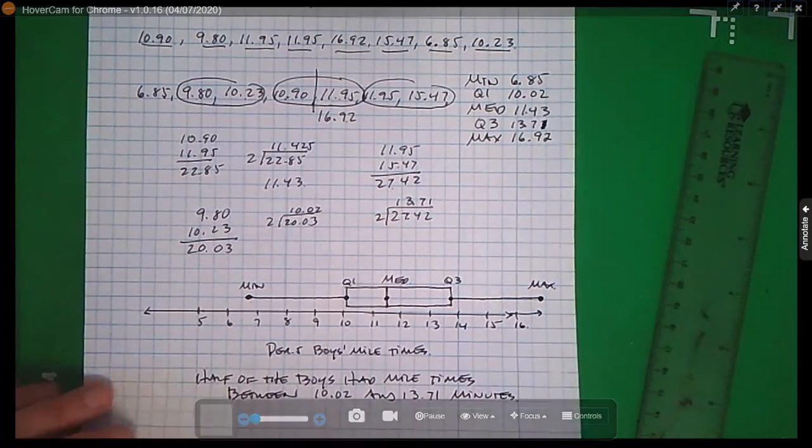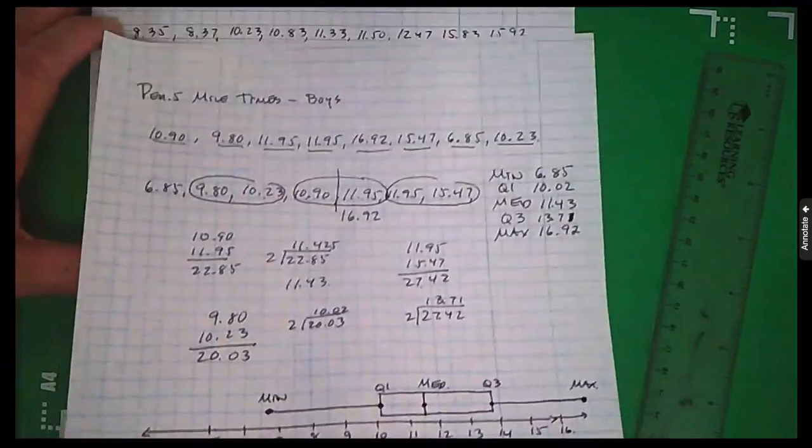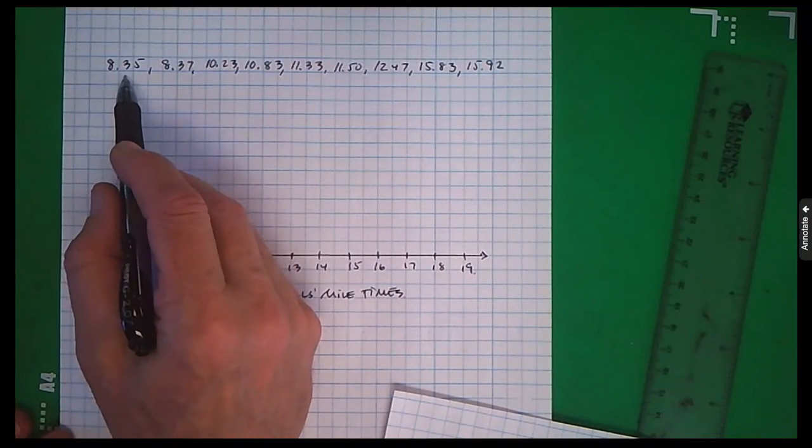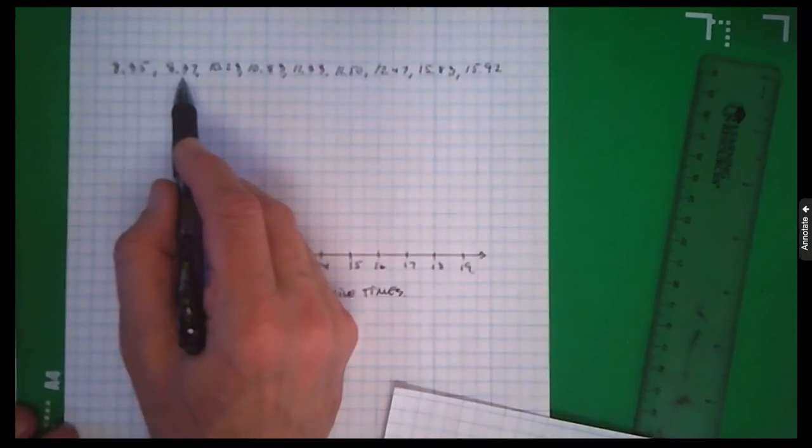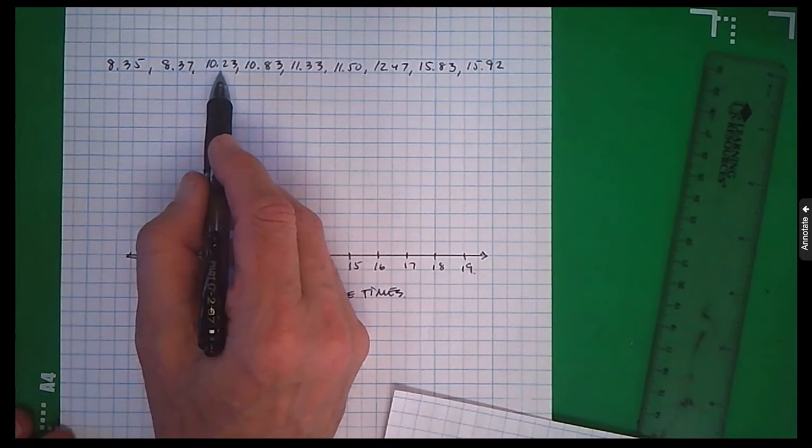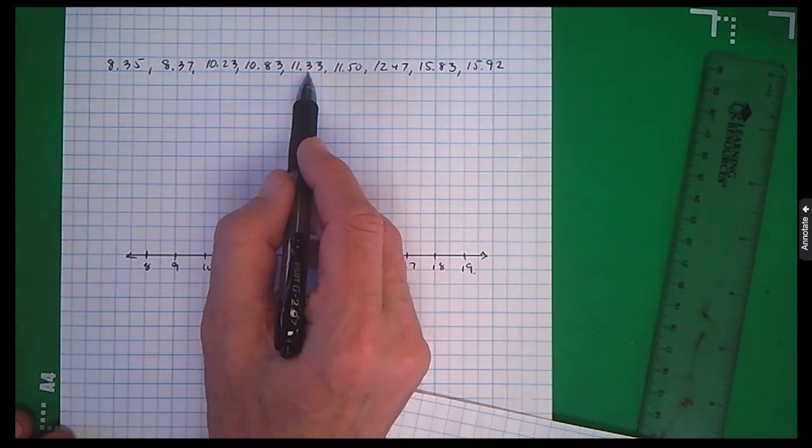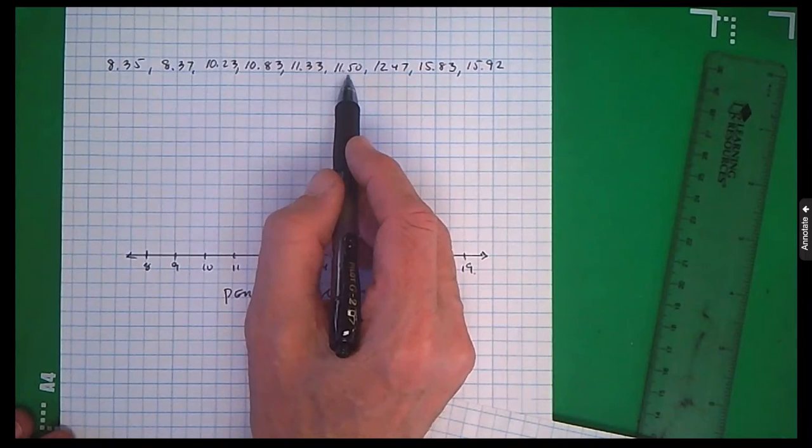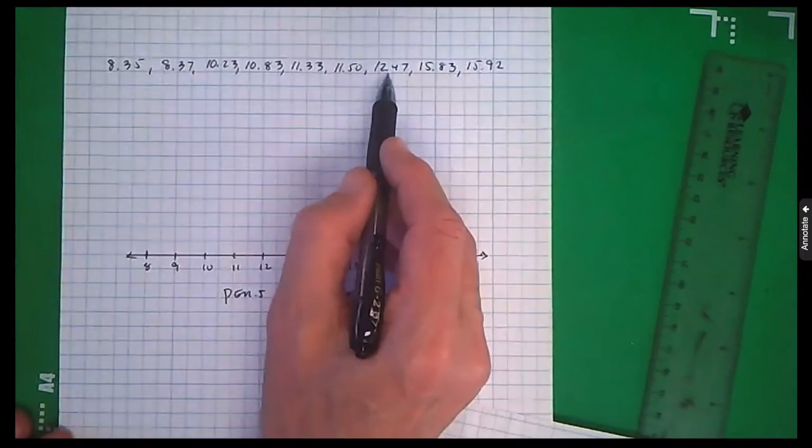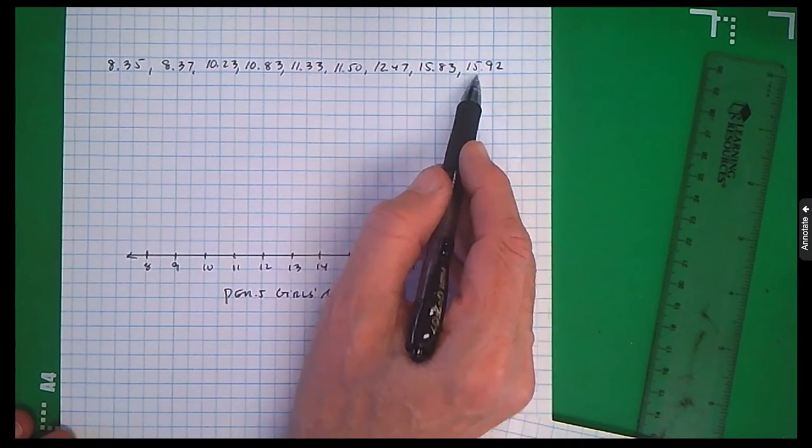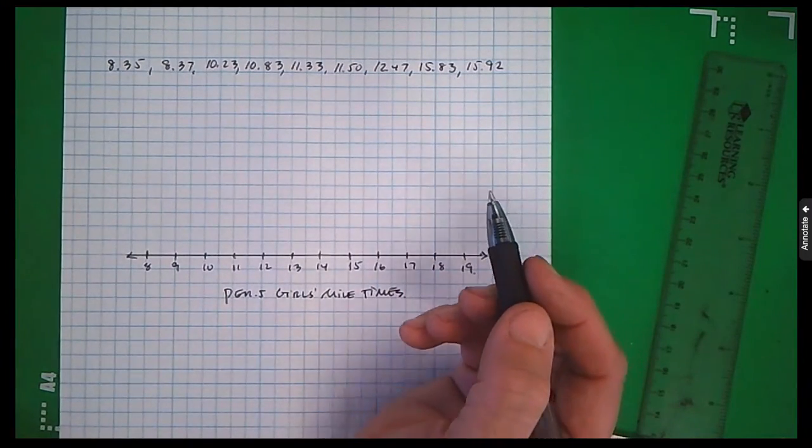Now let's have you try one. Here are the girls' mile times. I put them in order for you. 8.35, 8.37, 10.23, 10.83, 11.33, 11.50, 12.47, 15.83, 15.92.